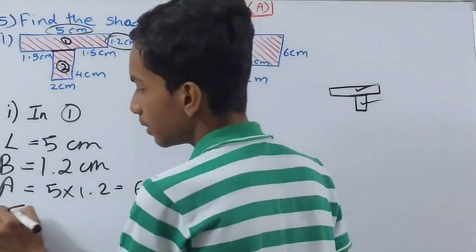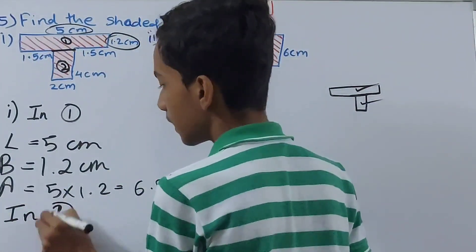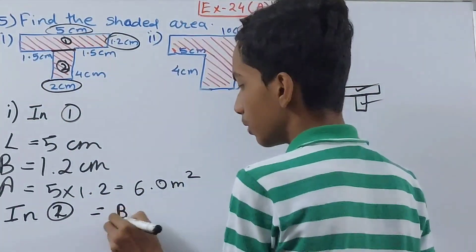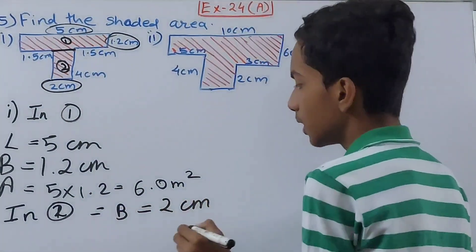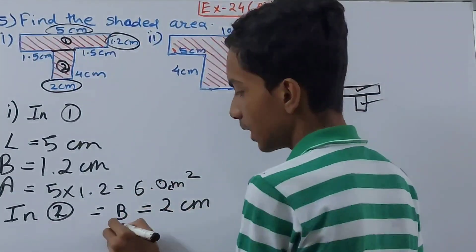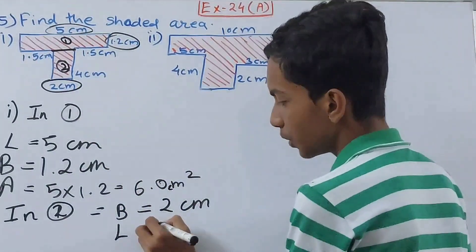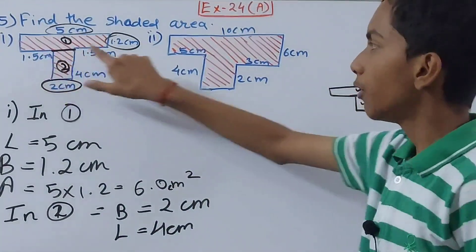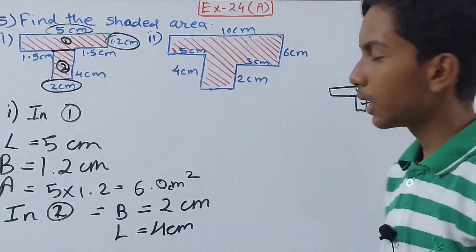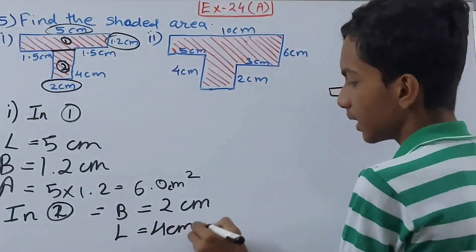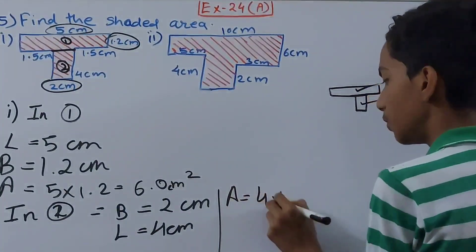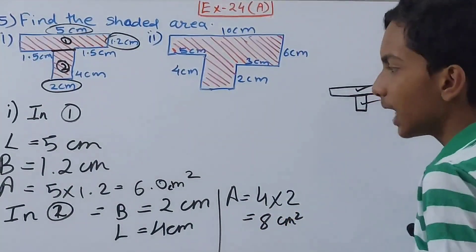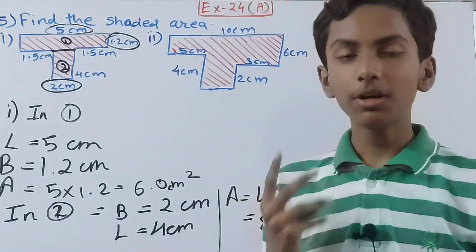In the second part, the breadth equals 2 centimeters and the length equals 4 centimeters. The other dimensions — 1.5 and 1.5 — are not of our use, so we ignore them. The area becomes 4 × 2 = 8 square centimeters.